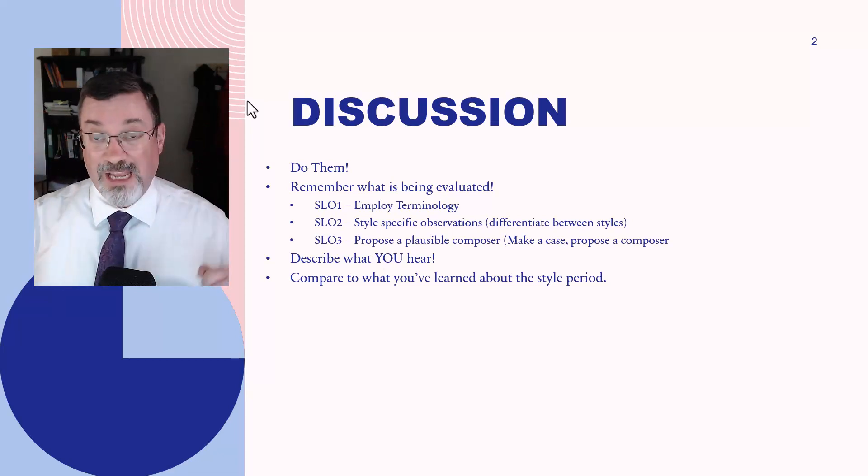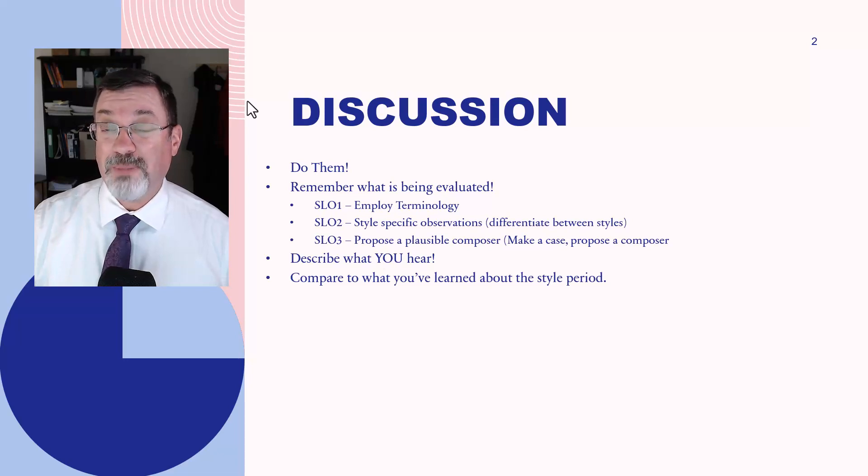And when you propose a plausible composer, you make your case, right? It's like you're prosecuting an individual, and you're saying, I believe that this individual wrote this piece. You have to give your evidence. You just can't go in and accuse. You need to accuse and build a case. So you build a case by saying what it is you hear in the piece, and drawing comparisons to other pieces that you know, drawing comparisons to other style periods. And that's generally what you do.